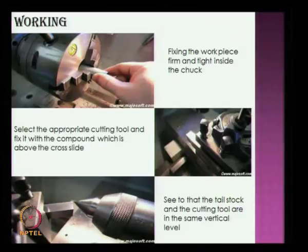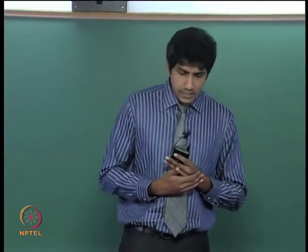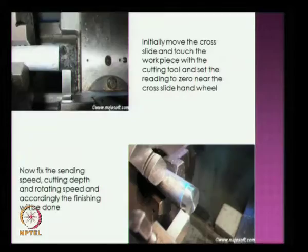Now, let me tell you the working of the lathe machine in sequence. Firstly, fix the workpiece firm and tight inside the chuck. Select the appropriate cutting tool and fix it with the compound which is above the cross slide. Then, see to it that the tail stock and the cutting tool are in the same vertical level. And then, initially move the cross slide and touch the workpiece with the cutting tool and set the reading to zero near the cross slide hand wheel. Now, fix the feeding speed, cutting depth, and the rotating speed accordingly. The finishing will be done.